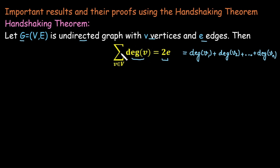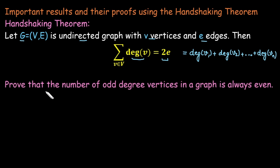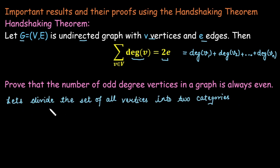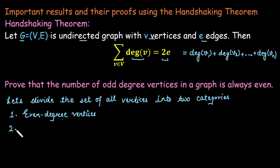The first result we are going to prove with the help of the handshaking theorem is that the number of odd-degree vertices in a graph is always even. To prove this, we divide the set of all vertices into two categories: even-degree vertices and odd-degree vertices.